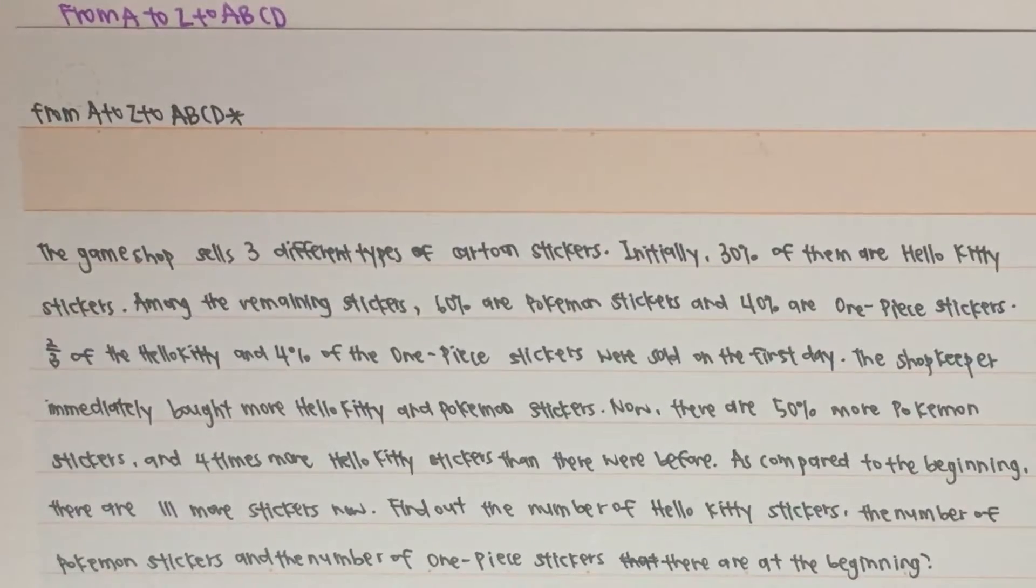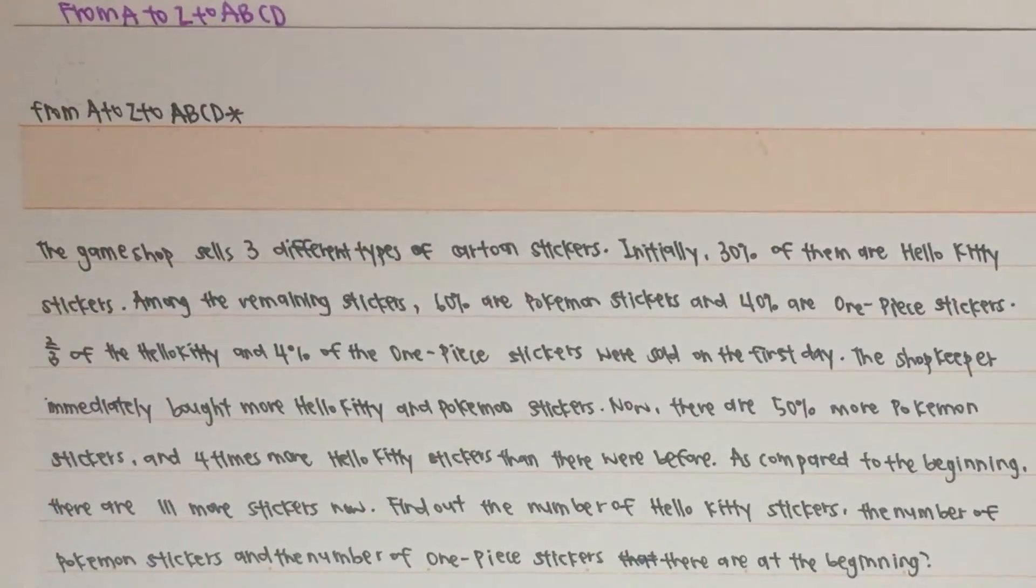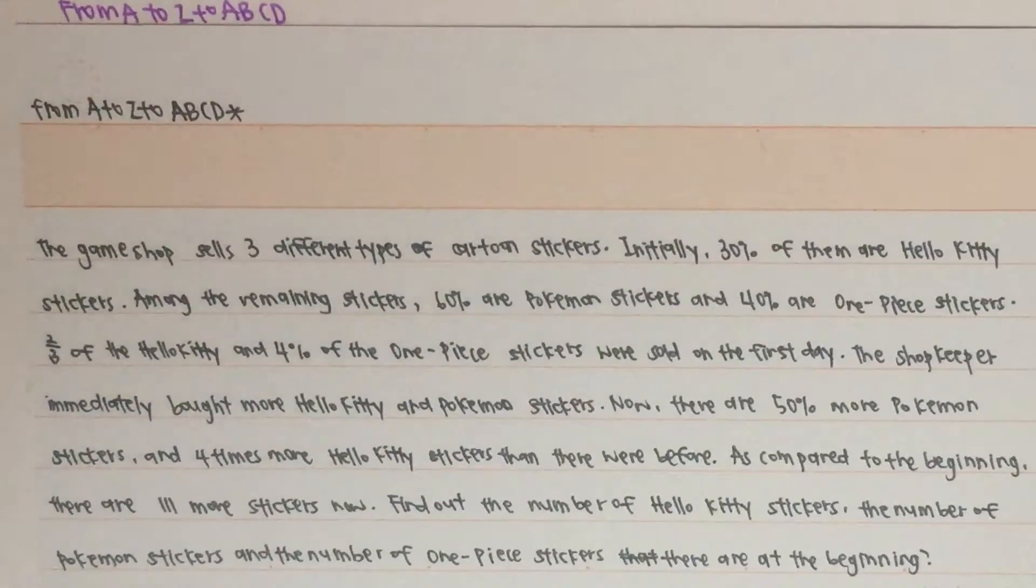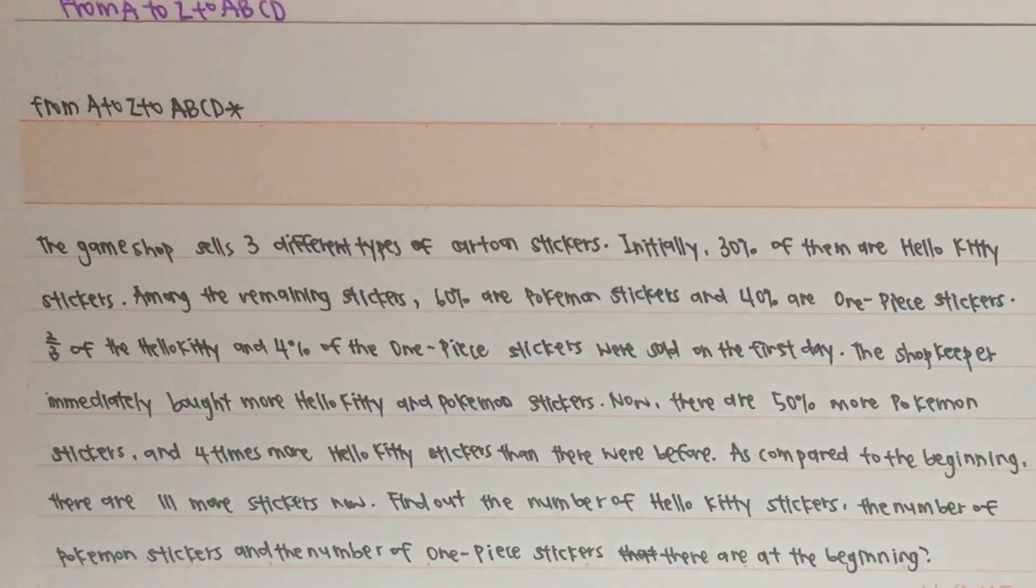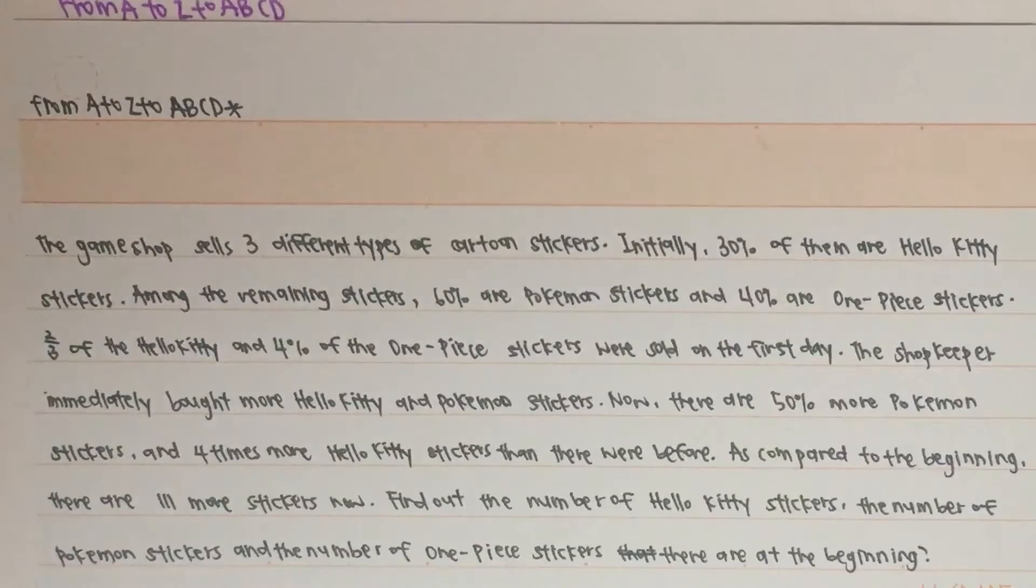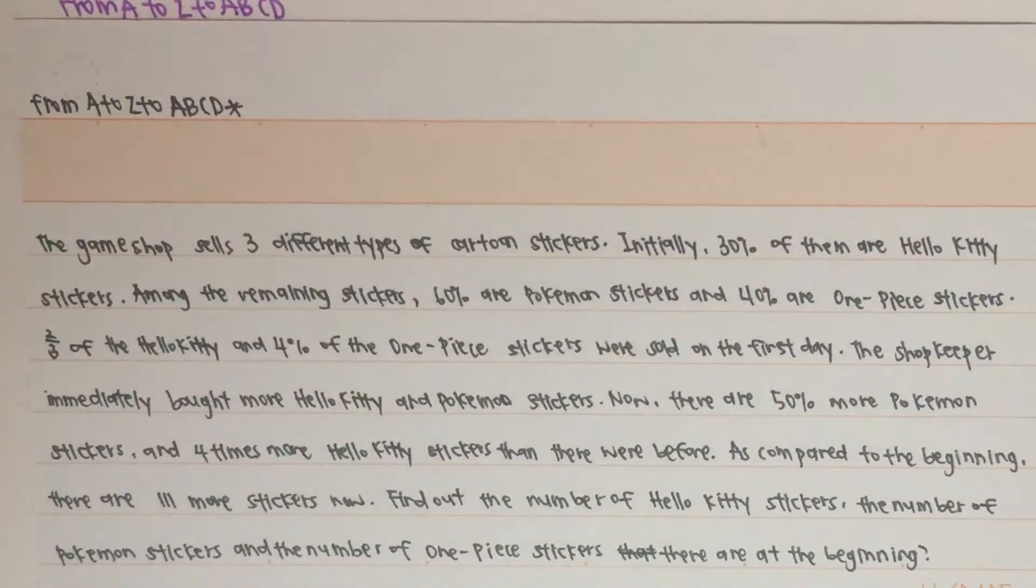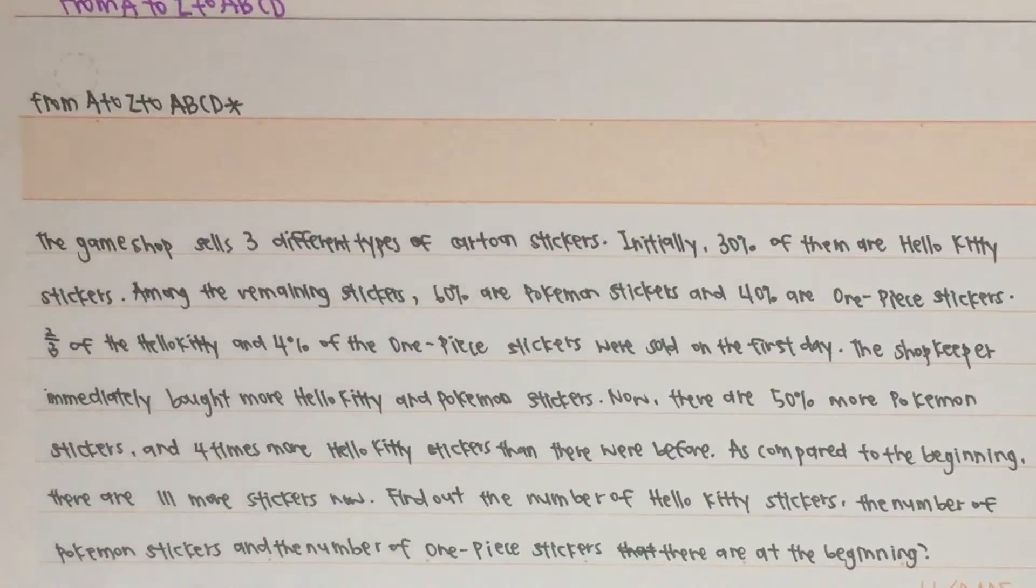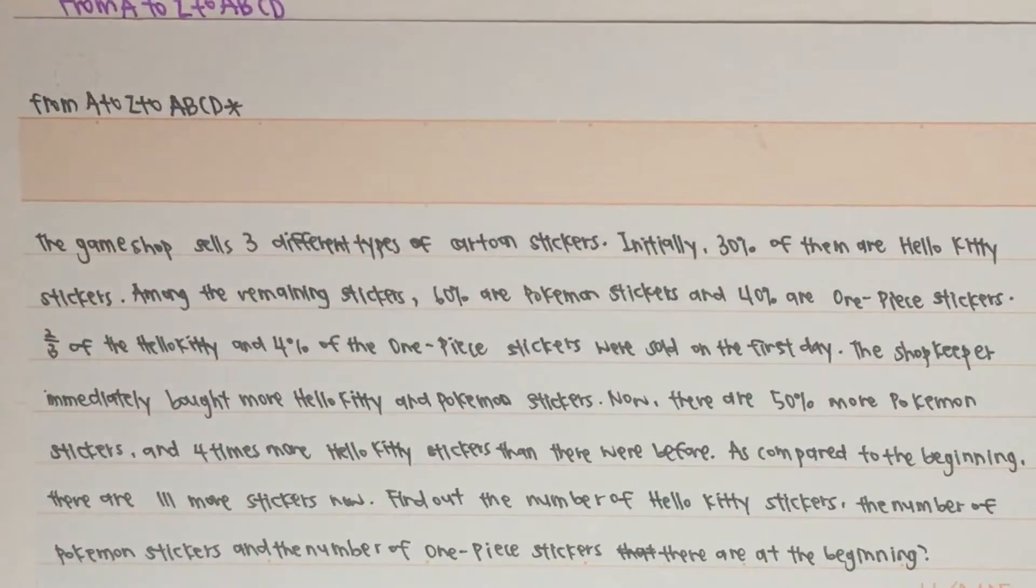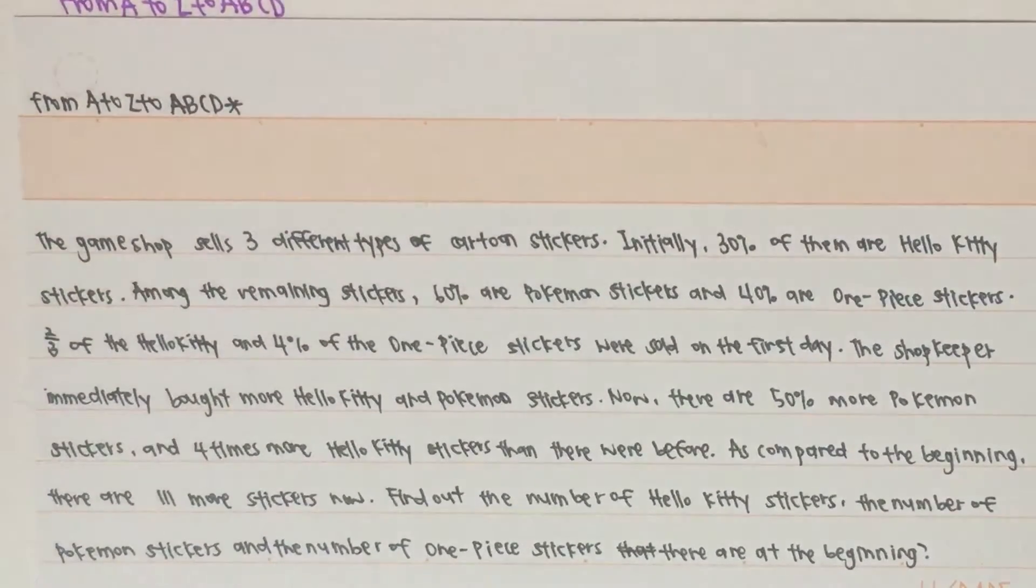The GameShop sells 3 different types of Cartoon Stickers. Initially, 30% of them are Hello Kitty Stickers. Among the remaining Stickers, 60% are Pokemon Stickers and 40% are One Piece Stickers. 30% of the Hello Kitty Stickers and 4% of the One Piece Stickers were sold on the first day. The Shopkeeper immediately brought more Hello Kitty and Pokemon Stickers. Now, there are 50% more Pokemon Stickers and 4 times more Hello Kitty Stickers than there were before. As compared to the beginning, there are 111 more Stickers now. Find out the number of Hello Kitty Stickers, Pokemon Stickers and One Piece Stickers at the beginning.